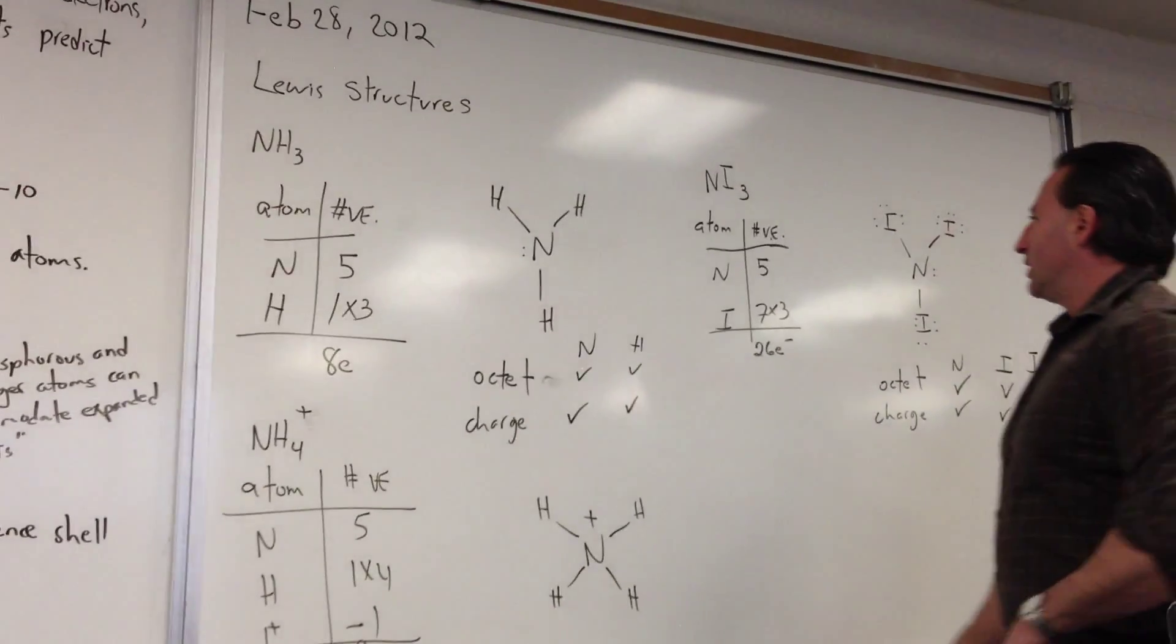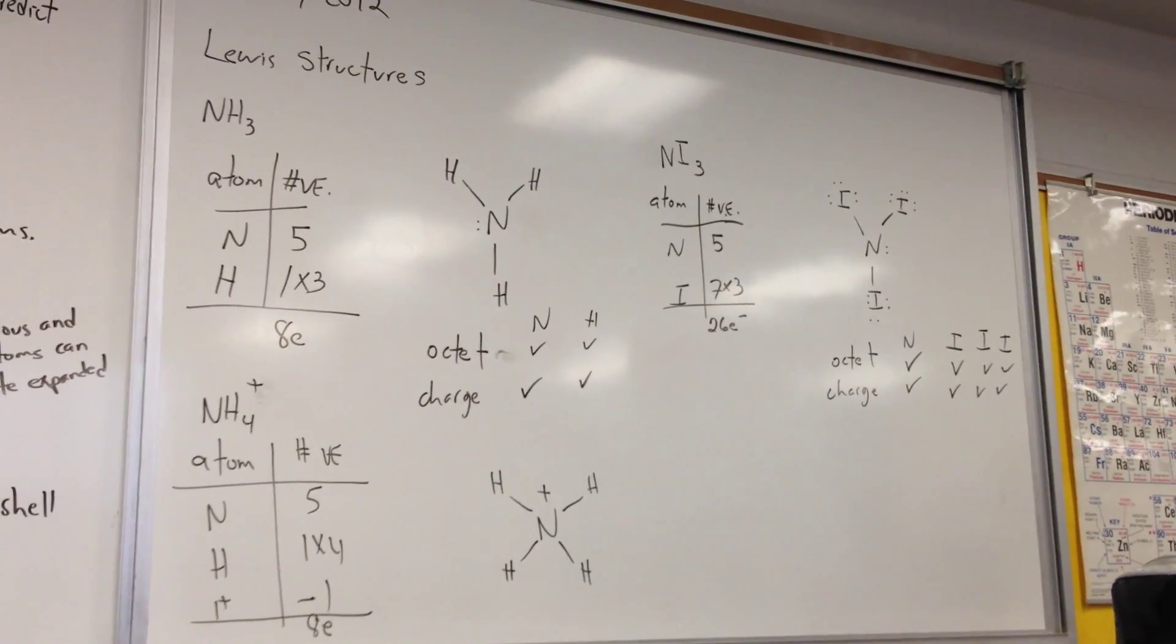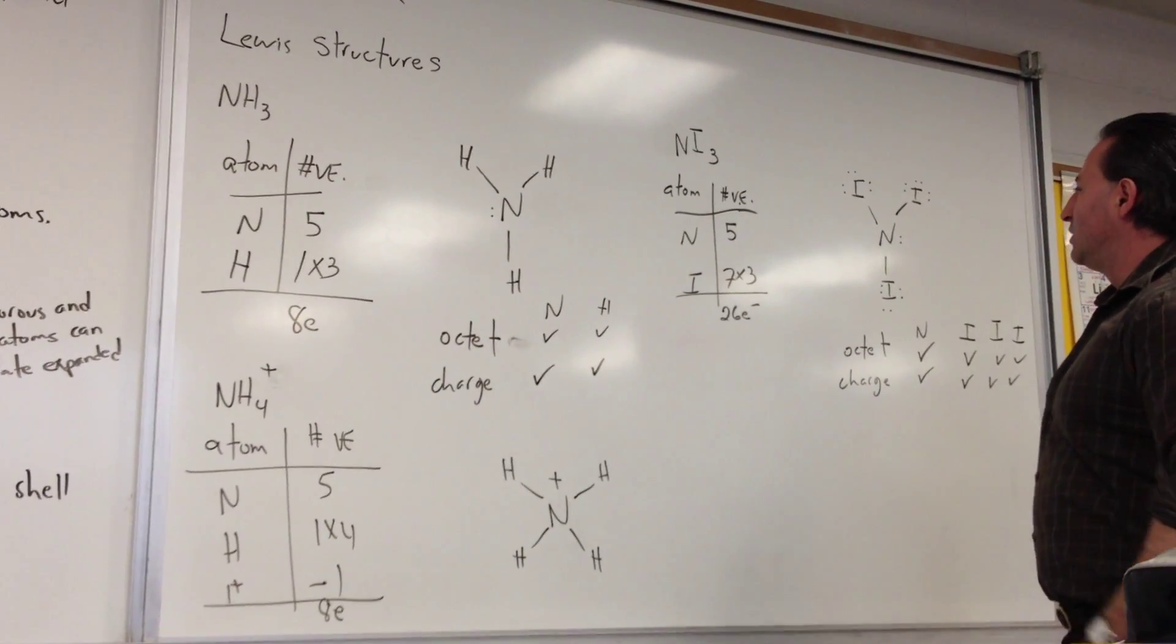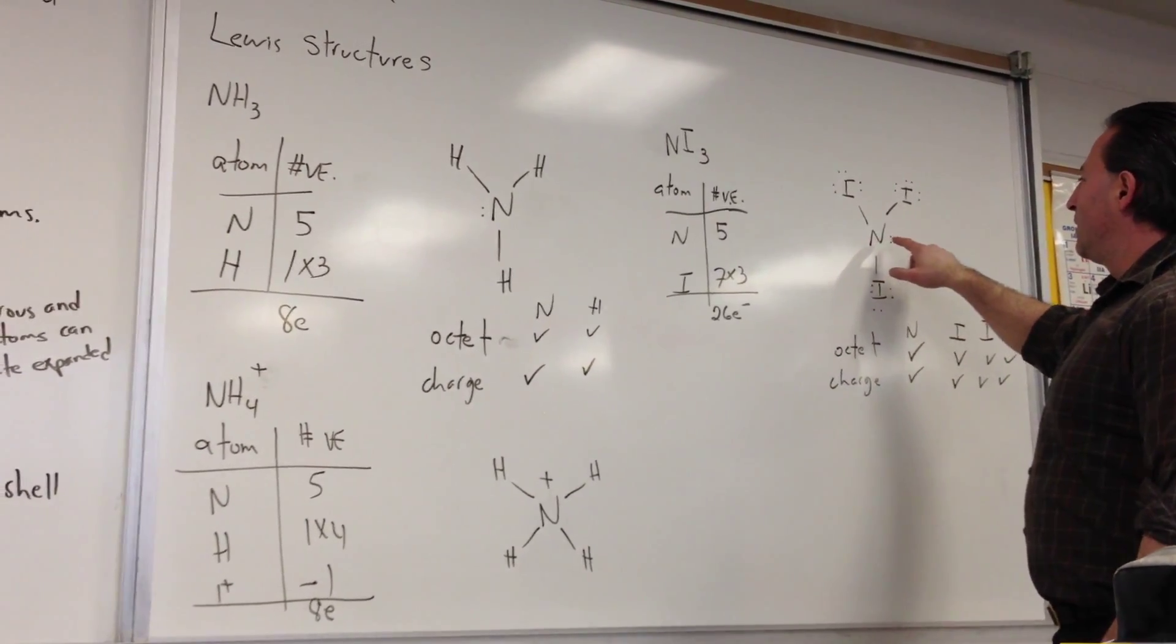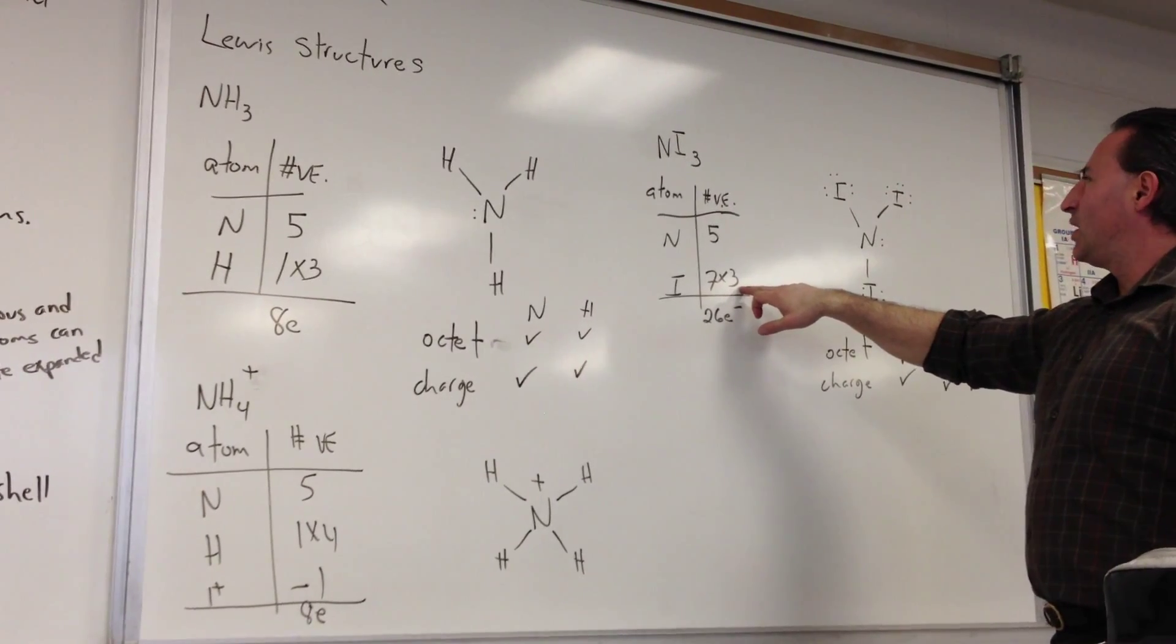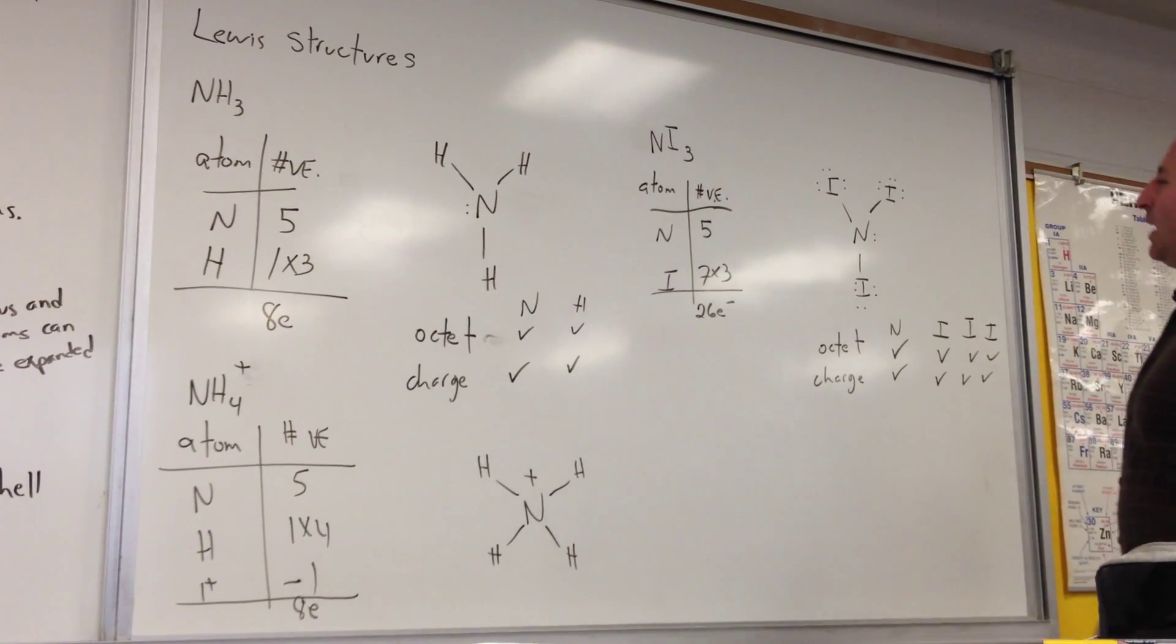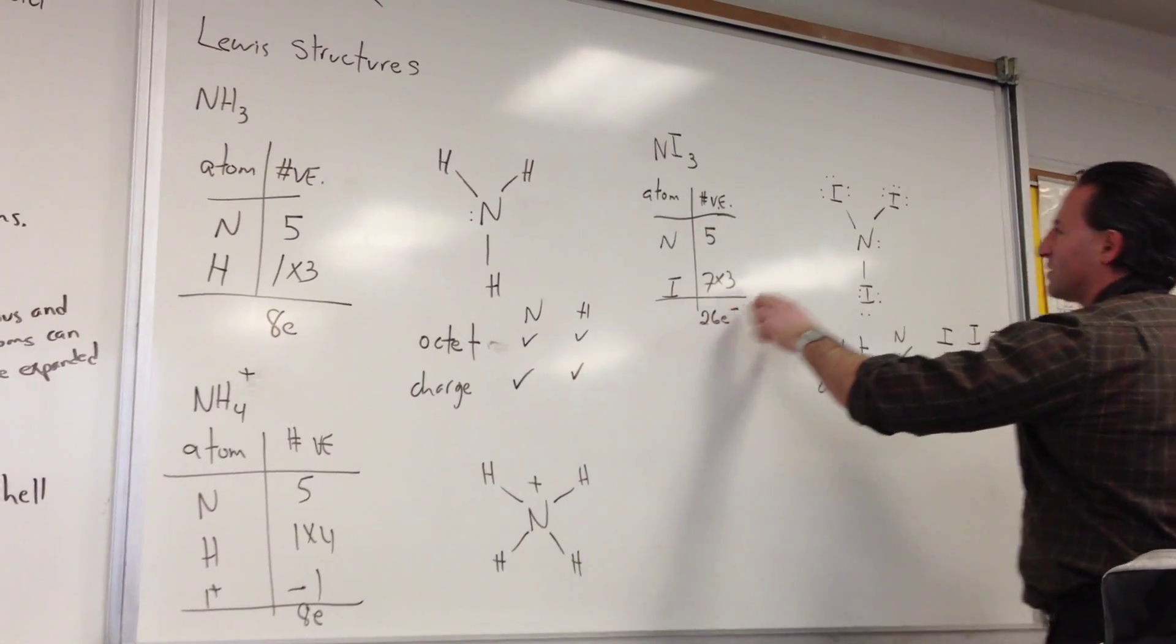And I took the liberty of doing nitrogen triiodide, although it's not a very stable compound. It's actually explosive and unstable in that it can be detonated when it's dry. Nitrogen has 5 electrons, iodine has 7, and there are 3 iodine atoms. This is a compound that's analogous to ammonia. You'll see that it has 26 electrons in it.